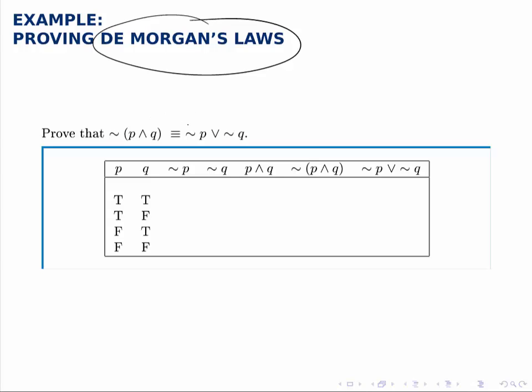But as always, to prove the two statements are equivalent, we'll build a truth table with a column for each of them and show that those columns are identical.